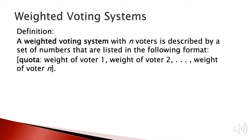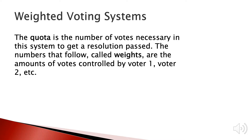A weighted voting system with n voters is described by a set of numbers listed in a bracket containing the quota, weight of voter 1, weight of voter 2, and weight of voter n. The quota is the number of votes necessary in the system to get a resolution passed, and the weights are the amount of votes controlled by each voter.